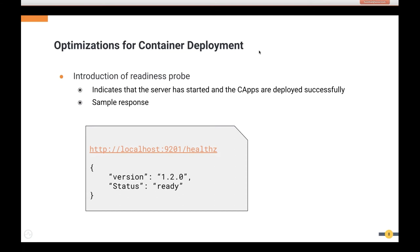We have done optimizations to support container deployments. We introduced a readiness probe, which is a vital config in Kubernetes — it tells the container management system whether the server is ready to receive requests. In previous Micro-Integrator versions, users had to use their own API. Now we have a built-in health API that indicates whether the server has started and all CApps are deployed successfully. Users can simply send a GET request to the health API in their environment.